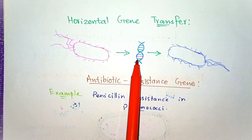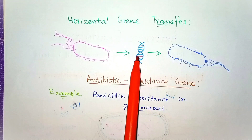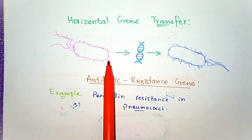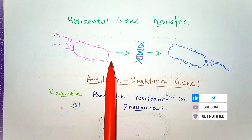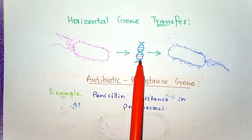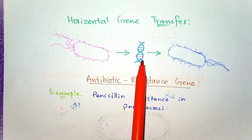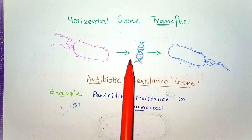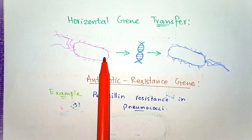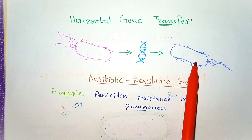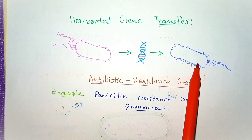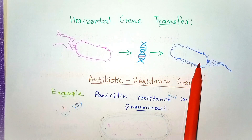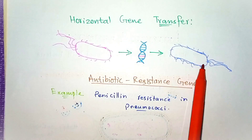Resistance is more usually acquired by horizontal transfer of resistance factors from a donor cell, perhaps of a different species, by transformation — which involves the incorporation of free DNA found in the environment into the bacterial genome. Once a bacterial cell acquires resistance, exposure to antibiotics kills non-resistant bacteria while the antibiotic-resistant bacteria continue to proliferate.